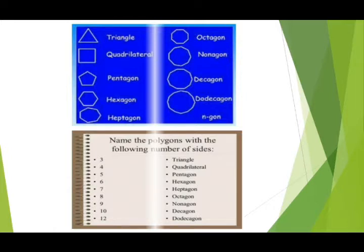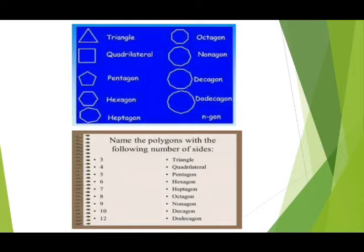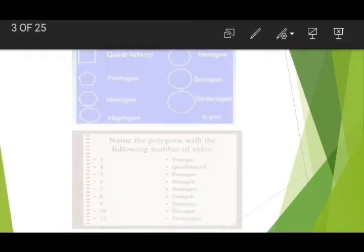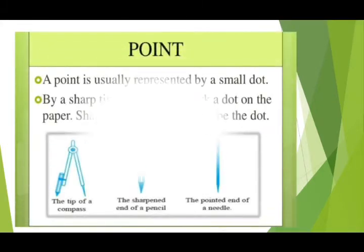Now let's name the polygons with the following number of sides. Three sides: triangle. Four sides: quadrilateral. Five sides: pentagon. Six sides: hexagon. Seven sides: heptagon. Eight sides: octagon. Nine sides: nonagon. Ten sides: decagon. Twelve sides: dodecagon.